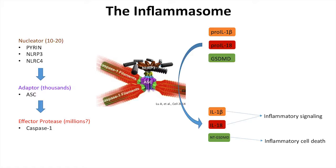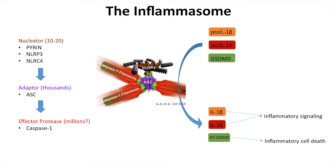Once those get activated and aggregate, they nucleate this adapter called ASC. You get this exponential filamentous growth of ASC. A small number of nucleator molecules can then activate a massive number of adapter molecules, which then recruit and activate a massive number of effector molecules — a protease, in this case caspase-1.